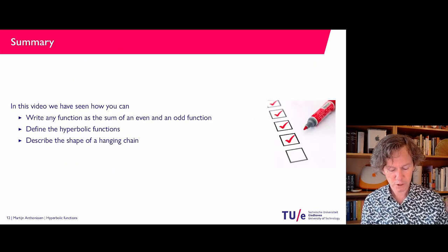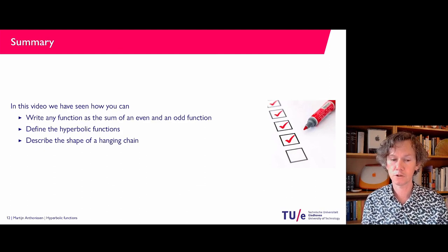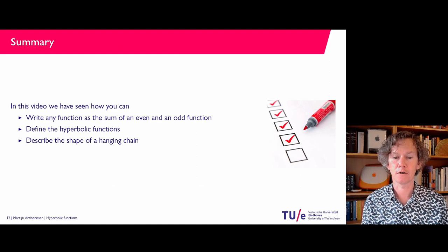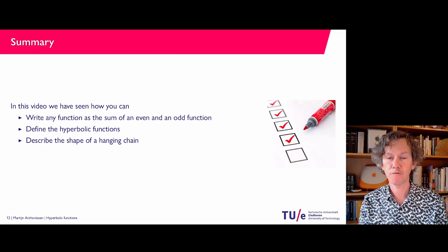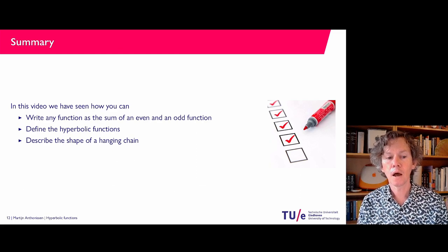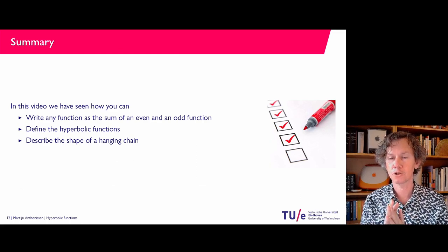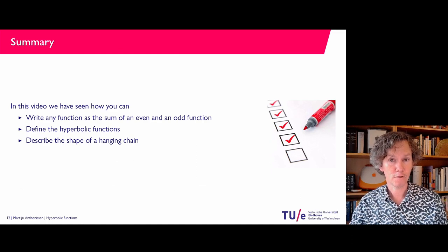That brings me to the end of this presentation. What we have seen is that any function can be written as a sum of an even and an odd function. Doing that with the exponential function gives cosine hyperbolic and sine hyperbolic, from which we can also introduce tangent hyperbolic. We have also seen that the shape of a hanging chain — the catenary — can be described using the cosine hyperbolic function. I hope this was clear, and I'll see you in the next video.